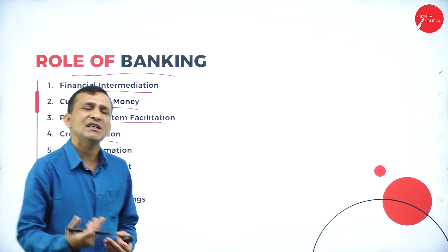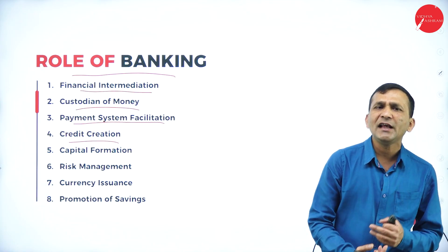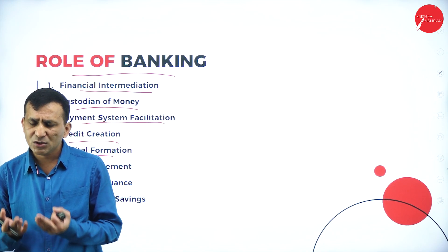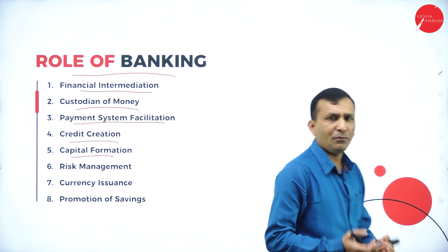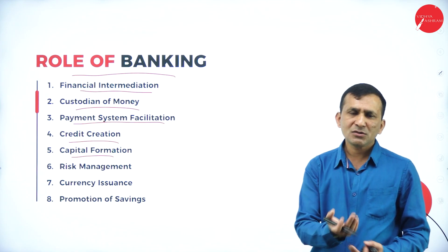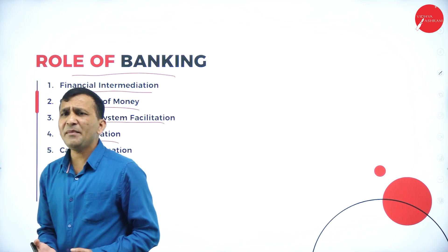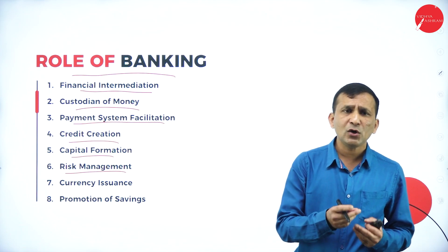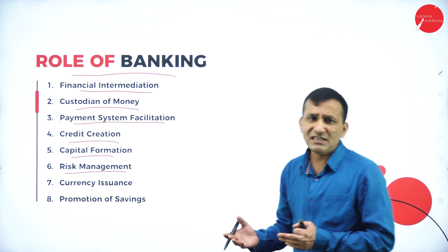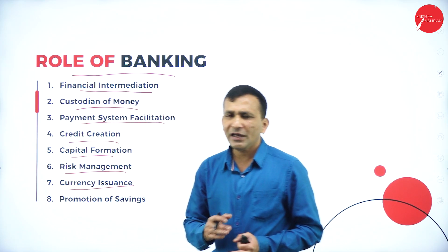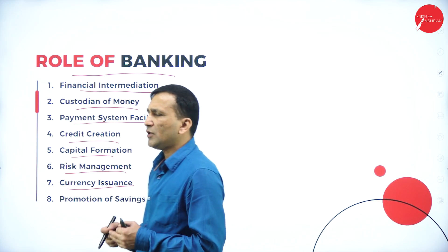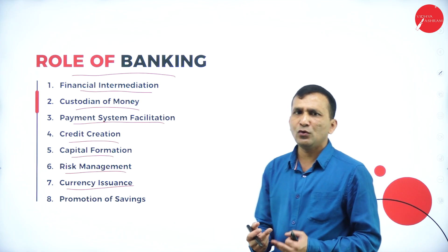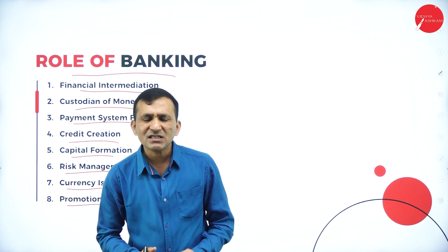Fourth is credit creation — banks accept deposits and start creating credit like loan facilities, providing loans to needy people. Fifth is capital formation, which is very important for any company — private or public — by raising funds through small savers. Sixth is risk management: the bankers must provide interest for saver accounts, and a lot of risk is involved in raising funds. Seventh is currency issuance — the central bank like RBI has sole authority to issue currency, managing printing based on inflation or deflation.